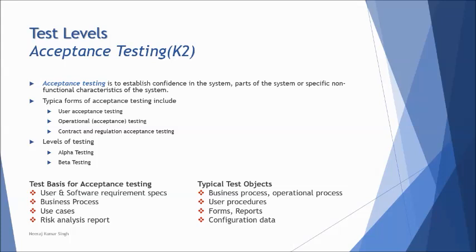Typical forms of acceptance testing include user acceptance, operational acceptance, regulatory acceptance, contractual acceptance, and business acceptance. When clients accept an application, they specify which criteria were met and which are yet to be met. Acceptance testing was also conducted at two levels: alpha, which is to acknowledge and accept the software, and beta, which provides the application to a certain group of end users to collect valuable feedback.